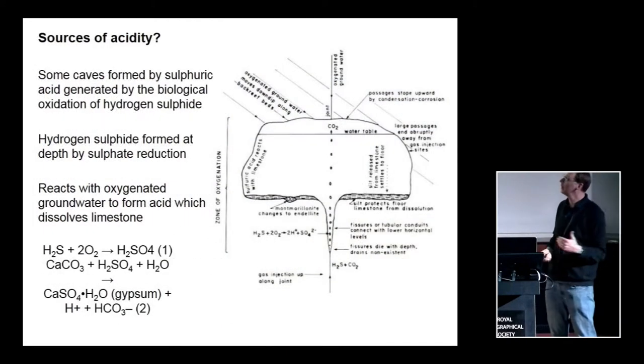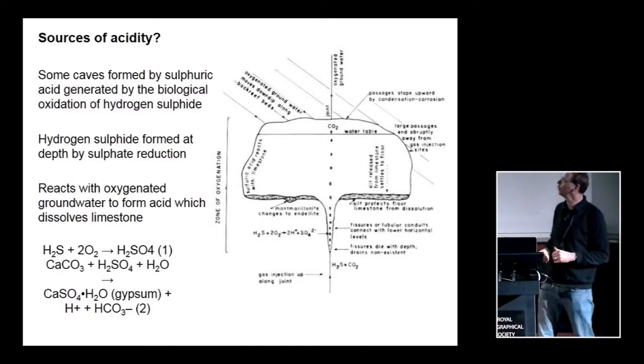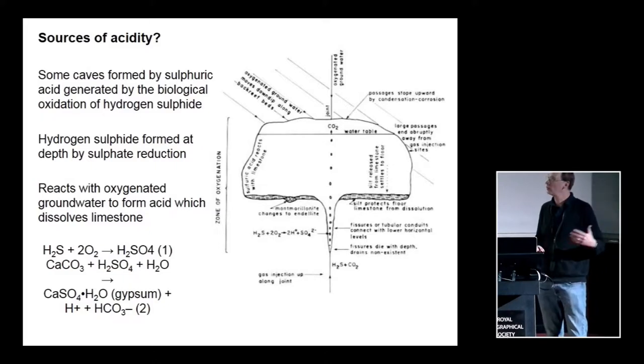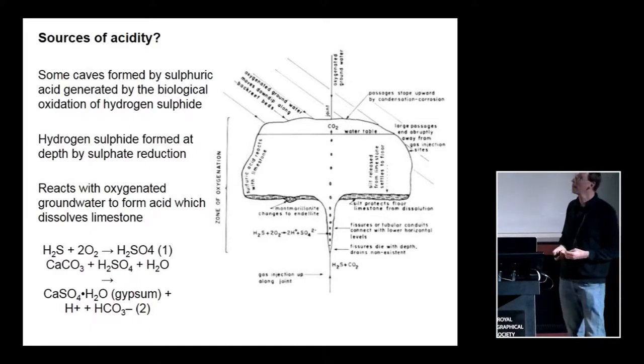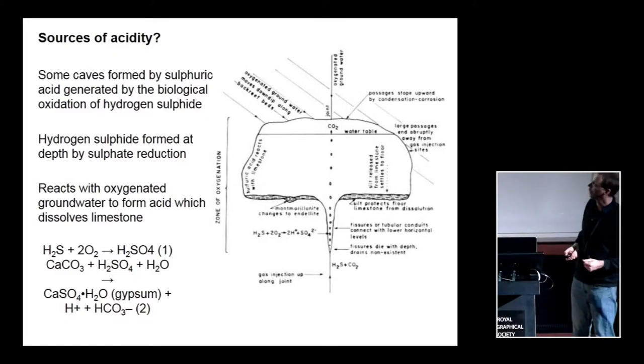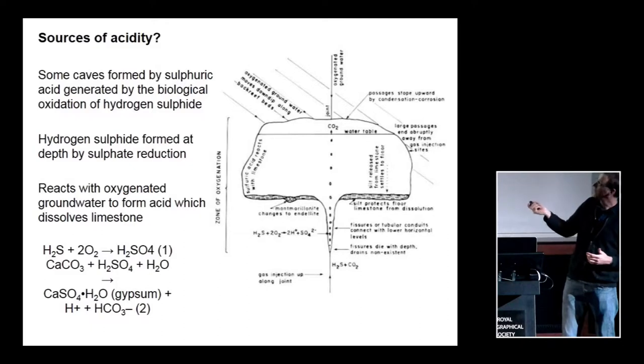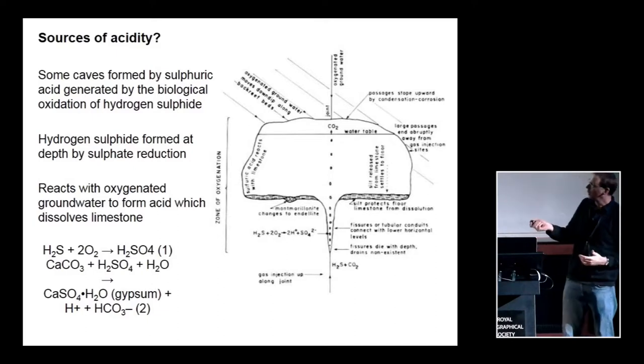There are also other sources of acid. The most common one is sulfuric acid. This is a slightly more unusual way of generating caves. Again, quite a few ways of getting sulfuric acid in a geological environment, but the most common one is where you're getting hydrogen sulfide rising up from depth. This is normally produced by the reduction of sulfate within the geological formations within sedimentary basins. But if you're getting hydrogen sulfide coming up along the fractures and joints from depth, where it meets oxygenated groundwater coming down from the surface,